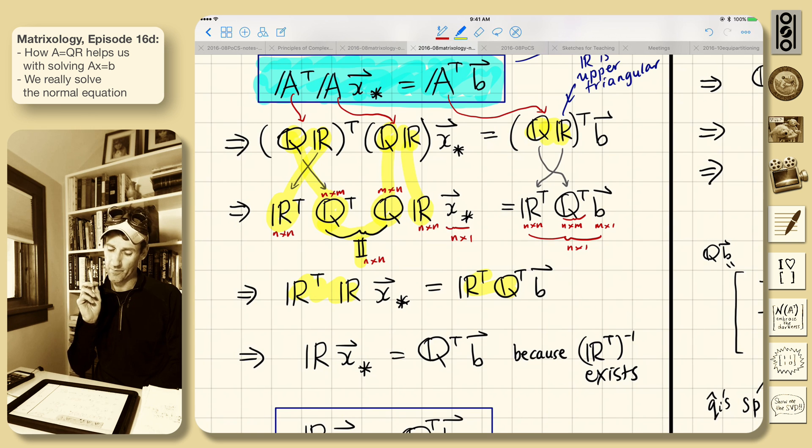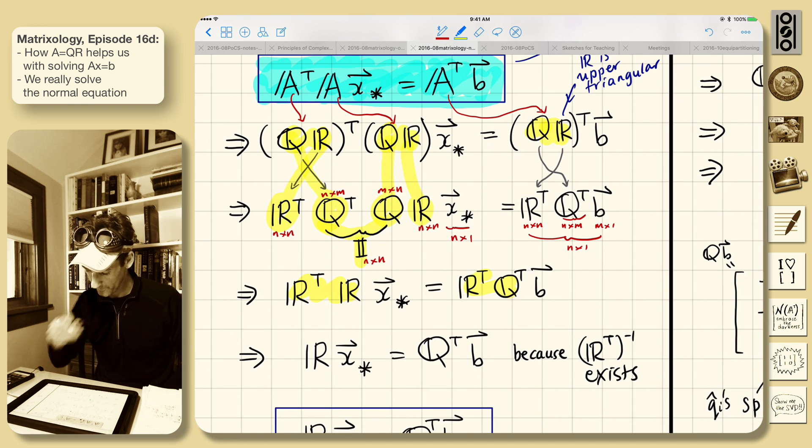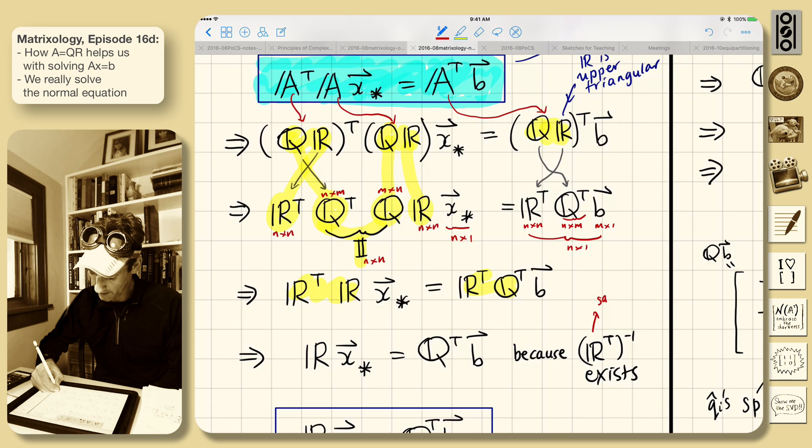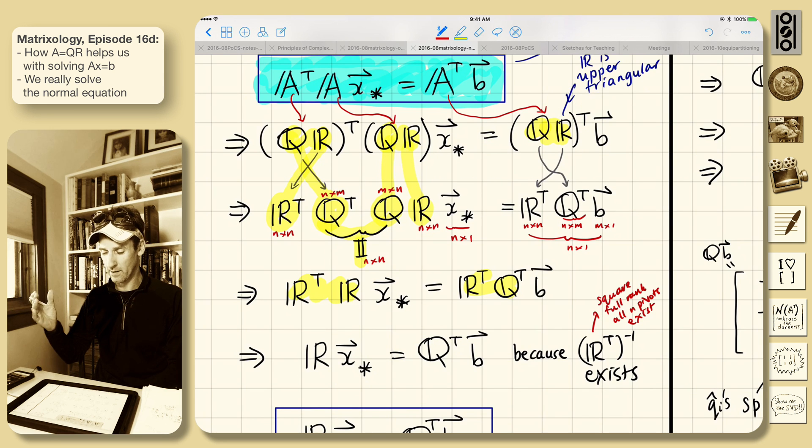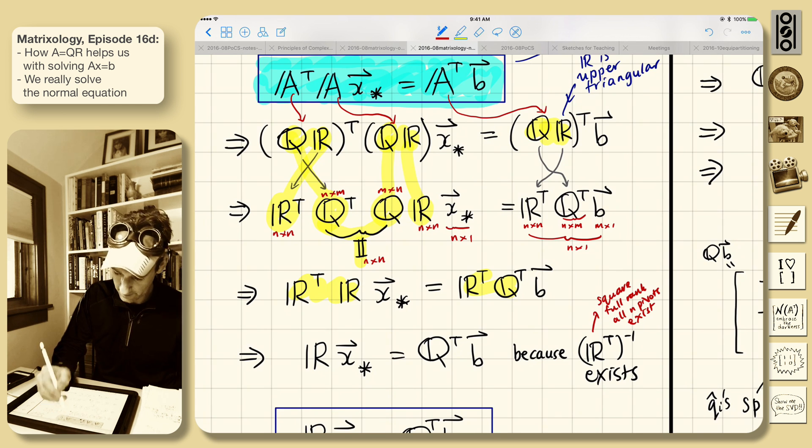R is an upper triangular matrix. It's got non-zero things along the diagonal. That means it's square, it has full rank. So it's square, full rank, all pivots, all N pivots exist. This is greater than zero. So we can find the inverse for it in principle, theoretically. So we can undo it. We can pre-multiply by the inverse here.